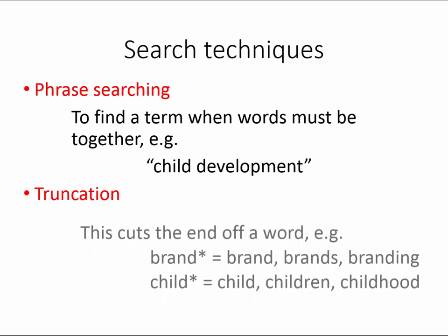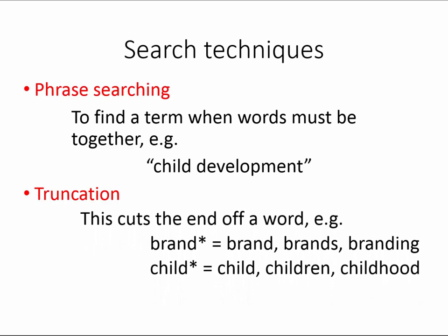Truncation is another handy tool that allows for wider searching. By using the asterisk, or sometimes a question mark, the end of the word will be cut off and the search will be only on the first part of the word. So "child*" will bring up results with the words child, children, and childhood.